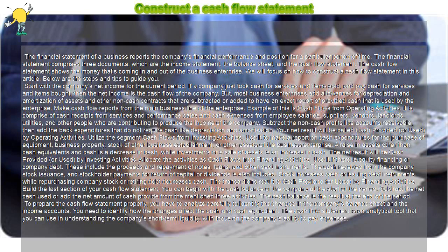Utilize the segment Cash Flows from Investing Activities. Use it to make a report on cash expenditures for the purchase of equipment, business property, stock of other business establishments, or other assets of the business enterprise. A raise in assets other than cash equivalents means a decrease in cash, while investments or a sale of assets is an increase in cash. The net result will be cash provided, or used, by investing activities.